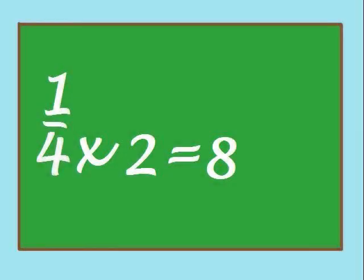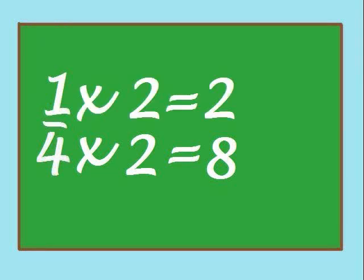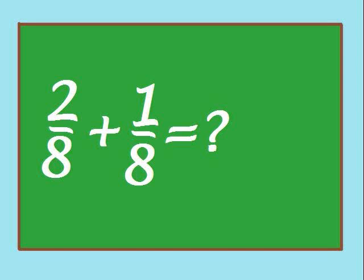We can change the denominator in one-fourth from a four to an eight by multiplying it by two. But because we multiplied the denominator by two, we have to do the same for the numerator. That gives us a whole new set of numbers. Now we are adding two-eighths and one-eighth together, and we already know how to do that.